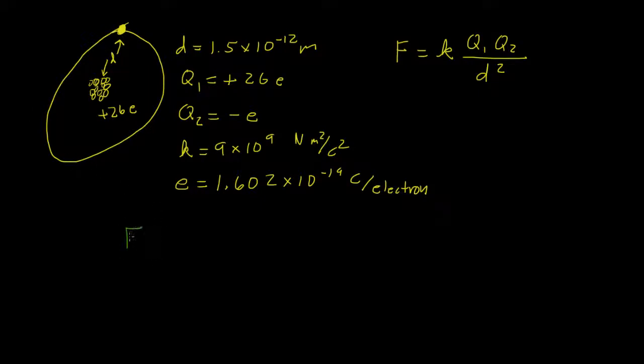So the force between this nucleus and this electron will be 9 times 10 to the ninth newtons meters squared per coulomb squared. That's k times 26 times 1.602 times 10 to the negative 19th coulombs per electron.